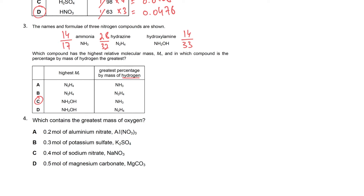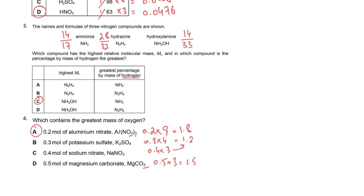To find which compound contains the greatest mass of oxygen, we multiply moles of the compound by the number of oxygen atoms. The values are: 0.2 × 9 = 1.8, 0.3 × 4 = 1.2, 0.4 × 3 = 1.2, and 0.5 × 3 = 1.5. The first compound with 1.8 has the highest value.